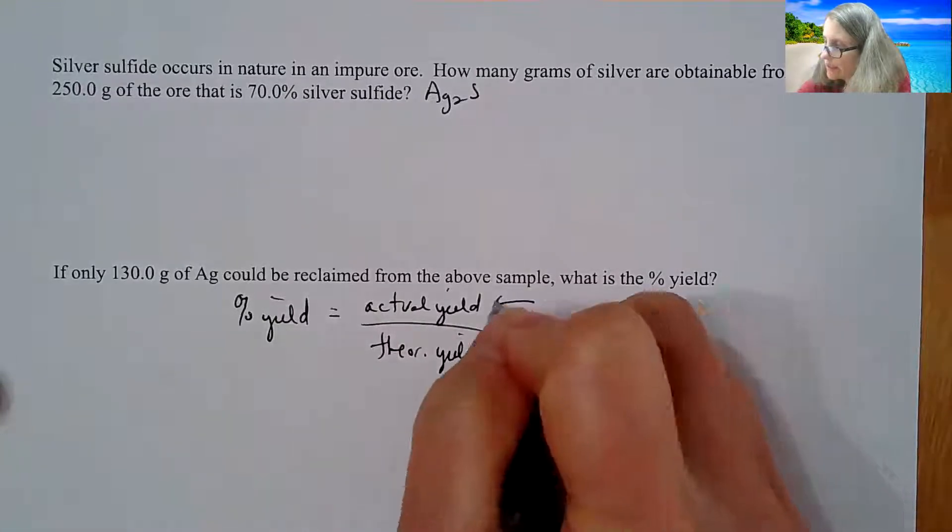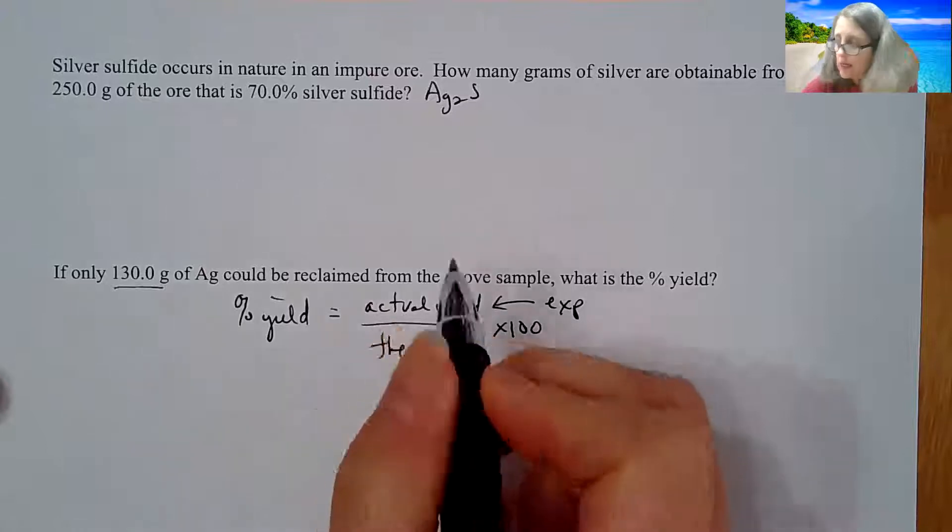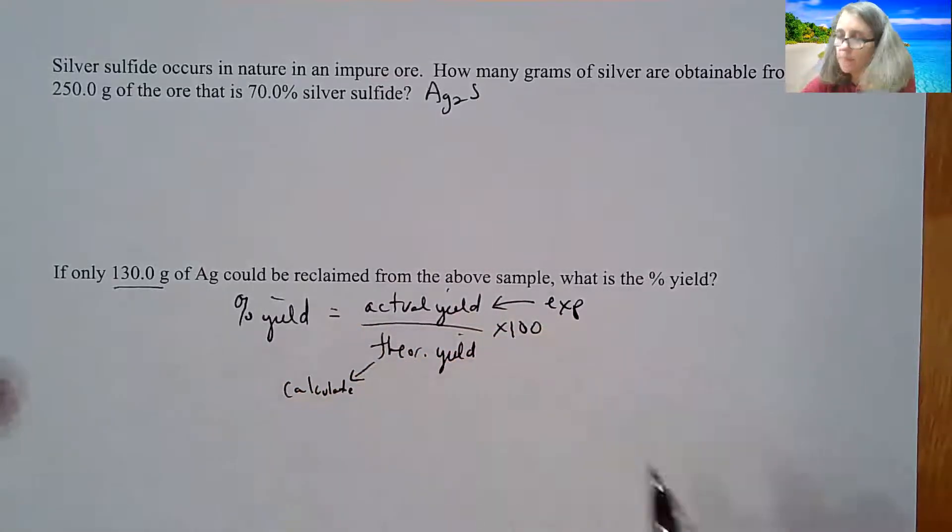Actual yield is what you get in the experiment itself. So in this case, it's 130. Theoretical yield is always going to be something you calculate from the problem at hand.